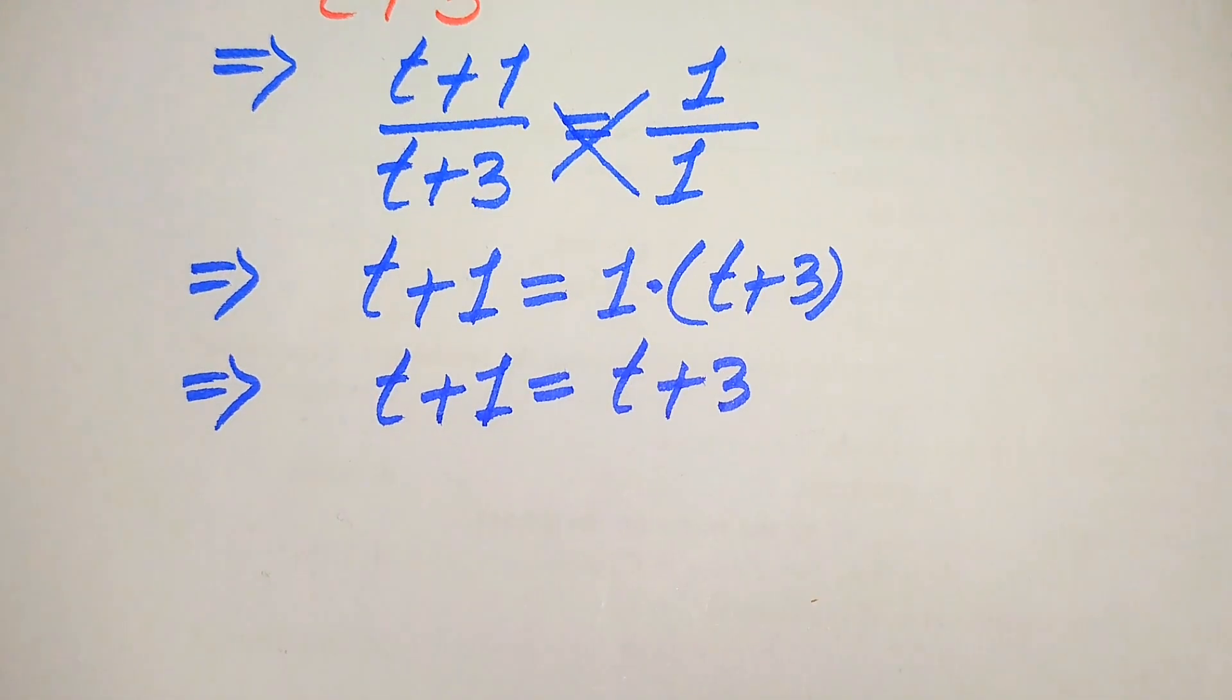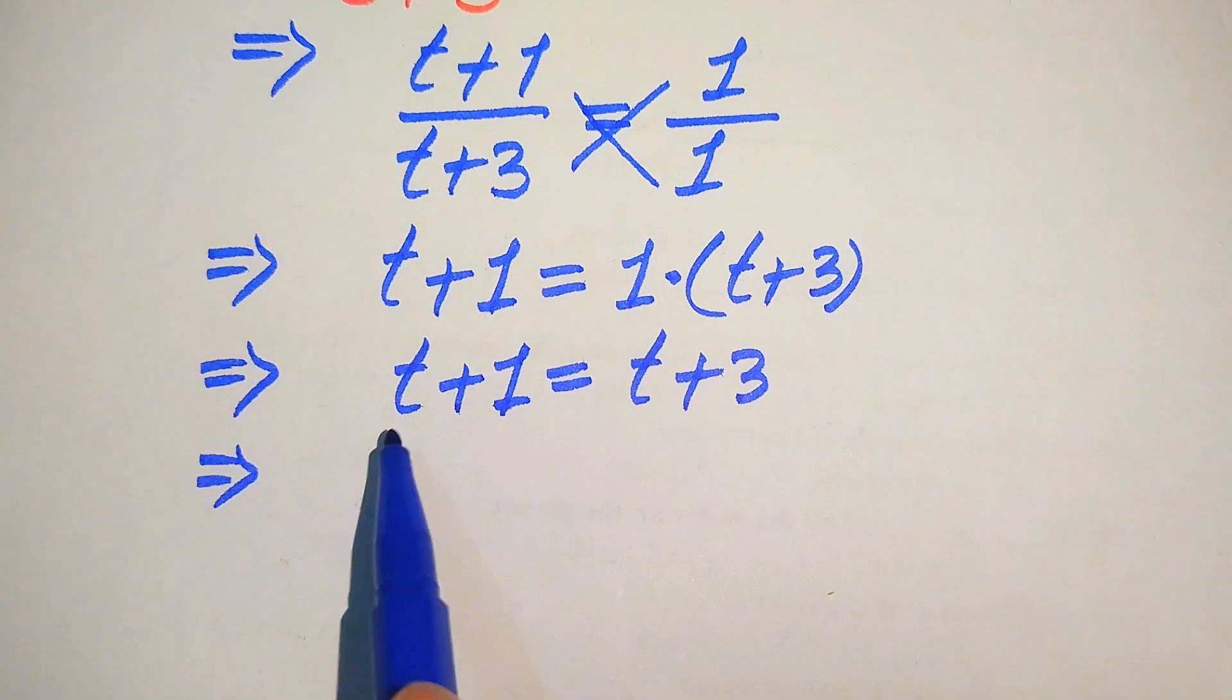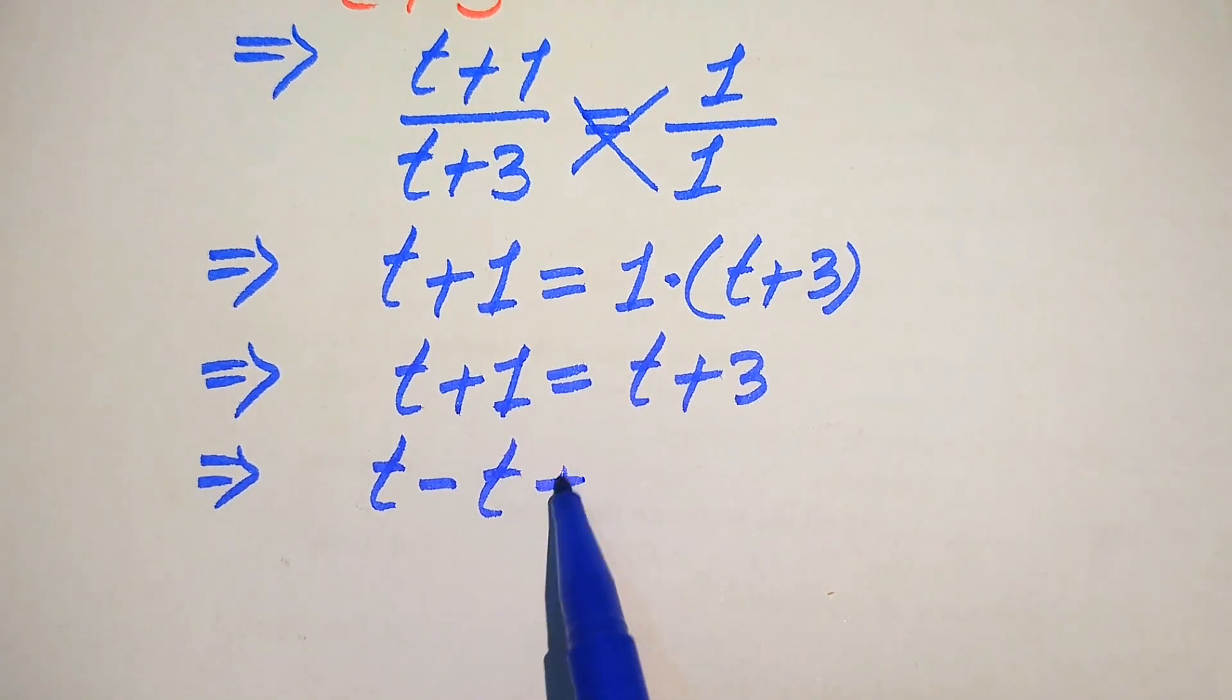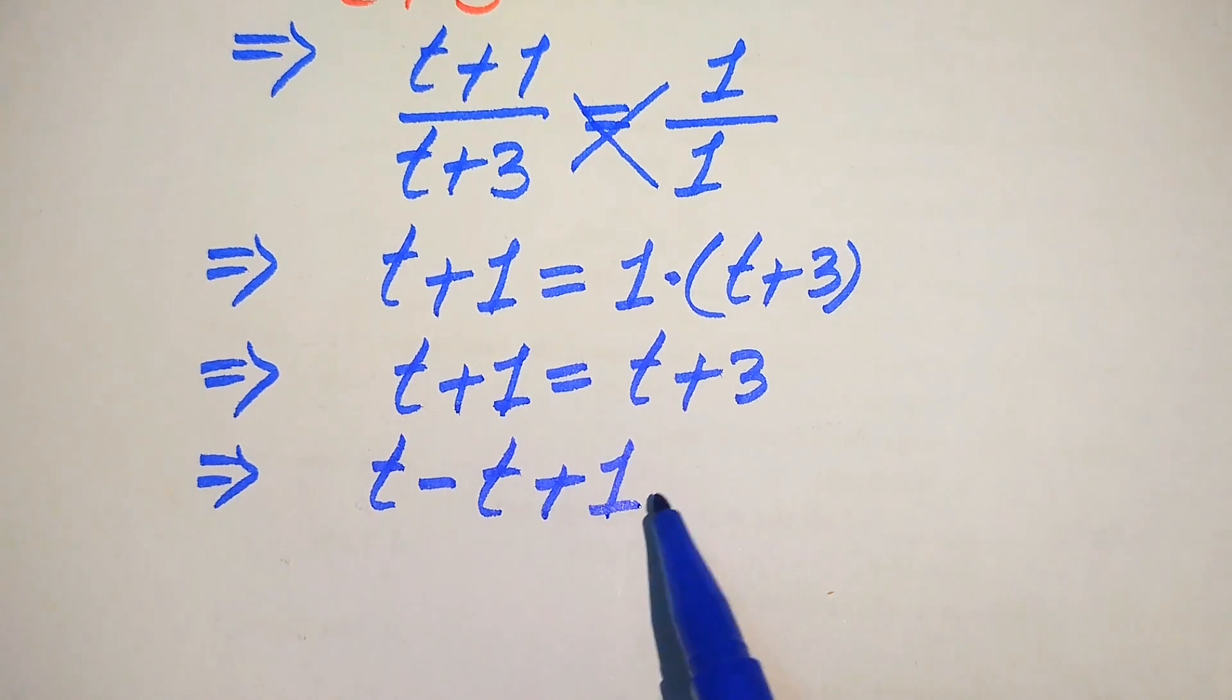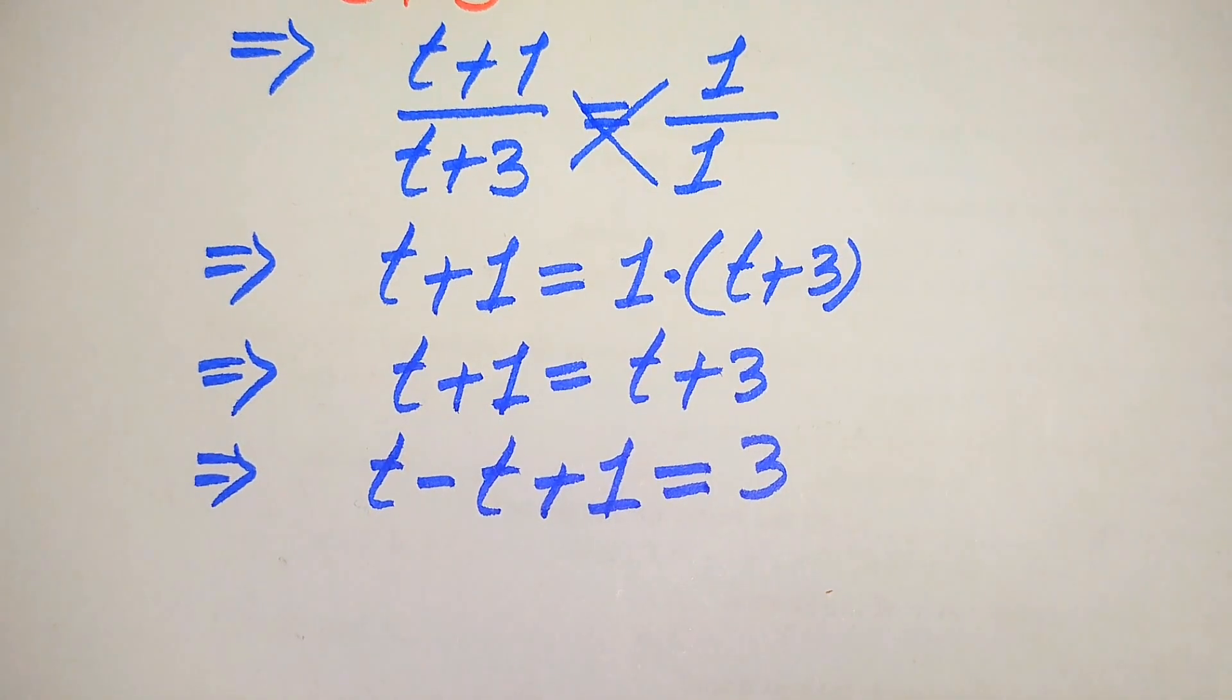Here we move the variable terms to the left-hand side. So for this, we move this t to the left-hand side and it becomes t minus t, and this is plus 1 equals plus 3.